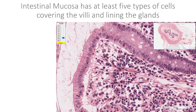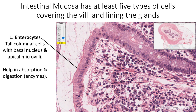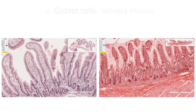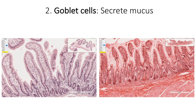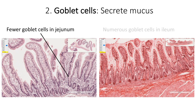Intestinal mucosa that covers the villus and lines the glands has at least five types of cells. Enterocytes are the most numerous; they are tall columnar cells with a basal nucleus and apical microvilli, and they help in absorption and digestion. The second type of cells are the goblet cells that secrete mucus. They are sparse in the duodenum and jejunum, becoming more numerous in the ileum.